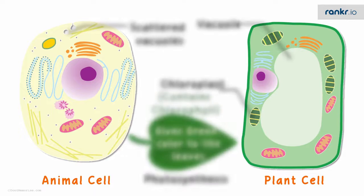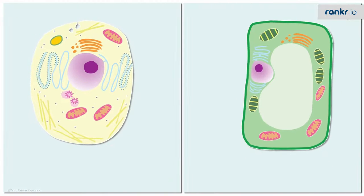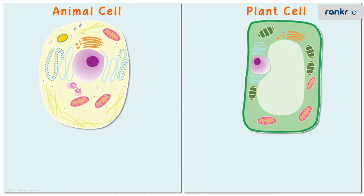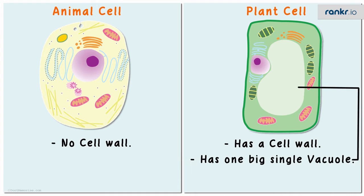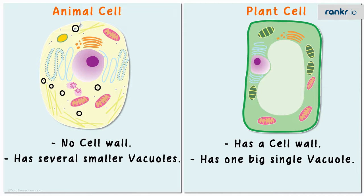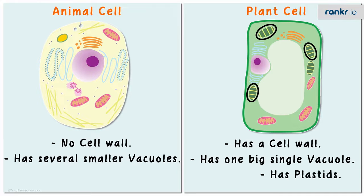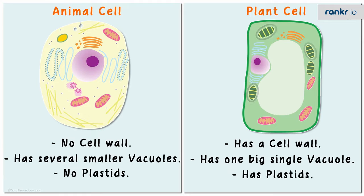Let us review the differences between the plant and the animal cell. The plant cell has a cell wall, whereas the animal cell doesn't have it. The plant cell has one big single vacuole, whereas the animal cell has several smaller vacuoles. Lastly, the plant cell has plastids, while the animal cell does not.